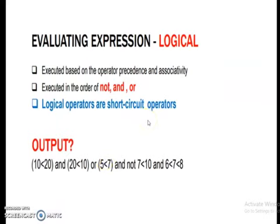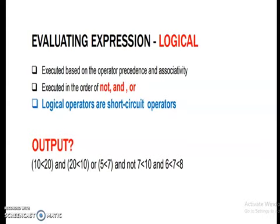For logical expressions — they are evaluated in the order of NOT, AND, OR by their own precedence. The logical operators are short-circuit operators. In this example: 10 less than 20 AND 20 less than 10 OR 5 less than 7 AND NOT 7 less than 10 AND 6 less than 7 less than 8, which is a chain statement. Remember: logical operators work in the order NOT, AND, OR.